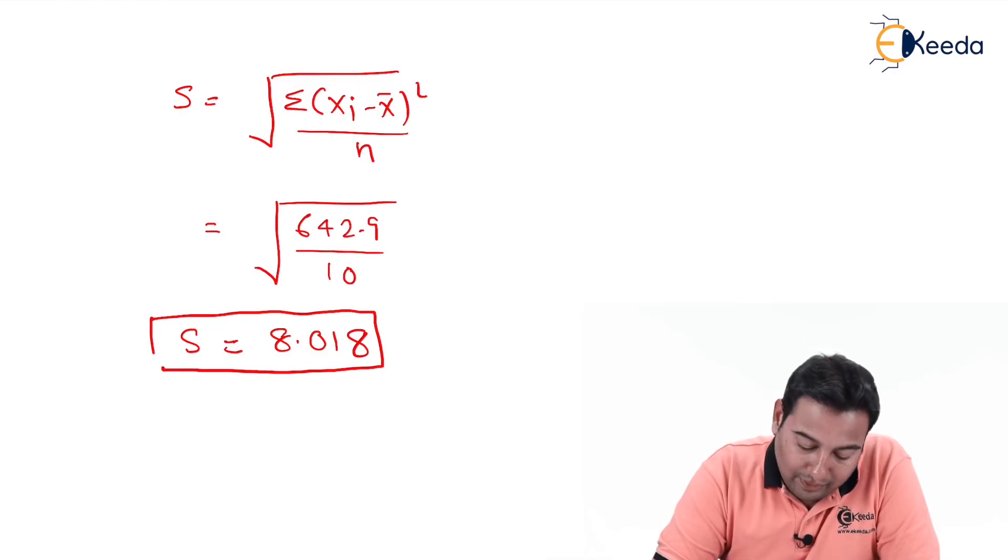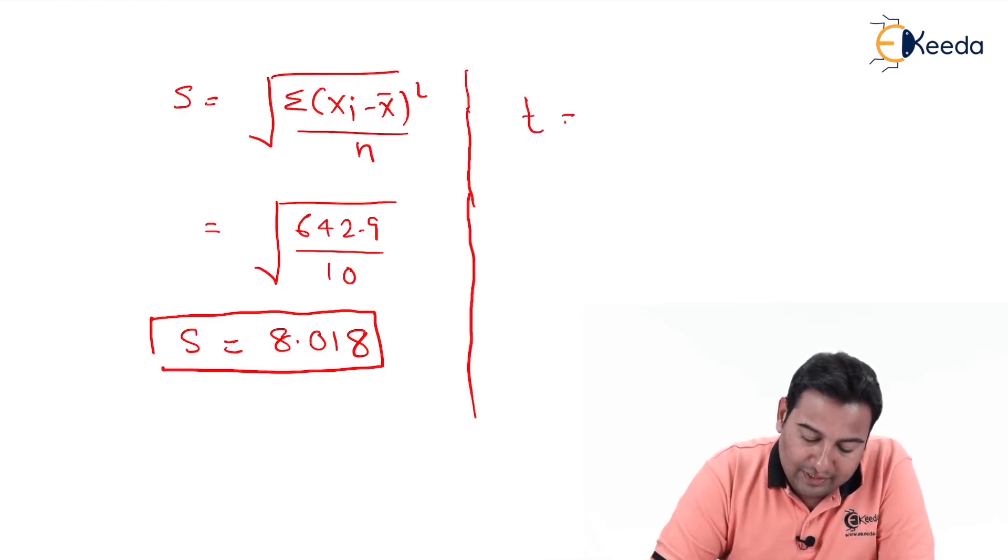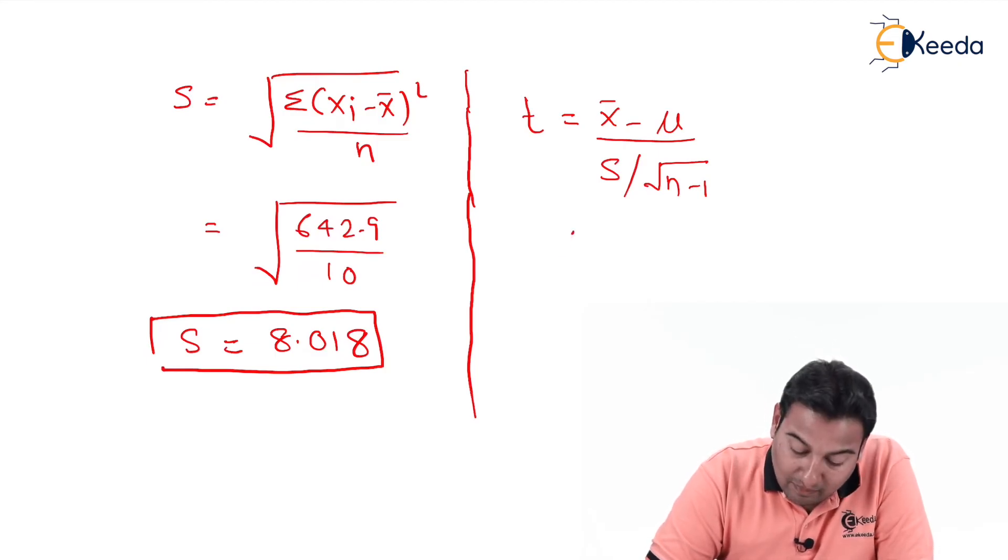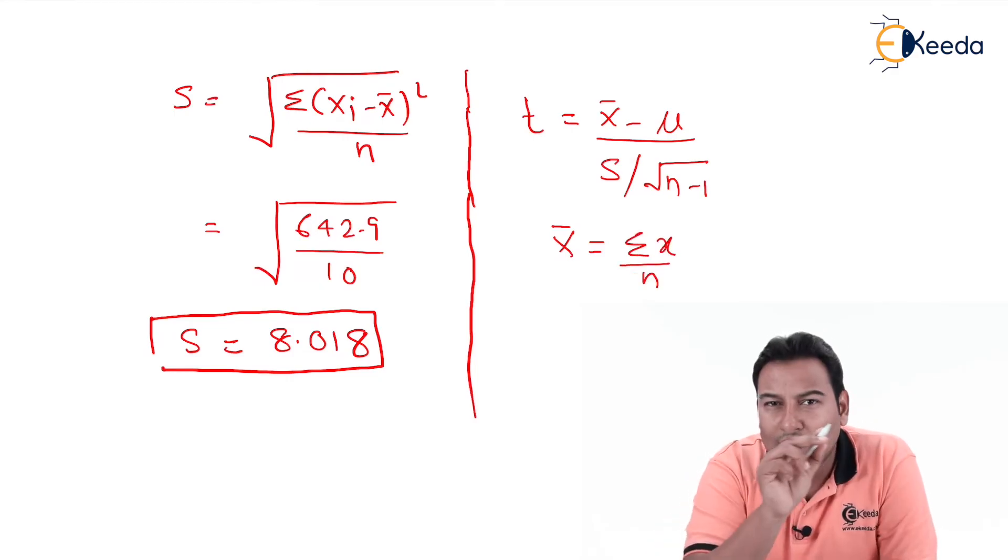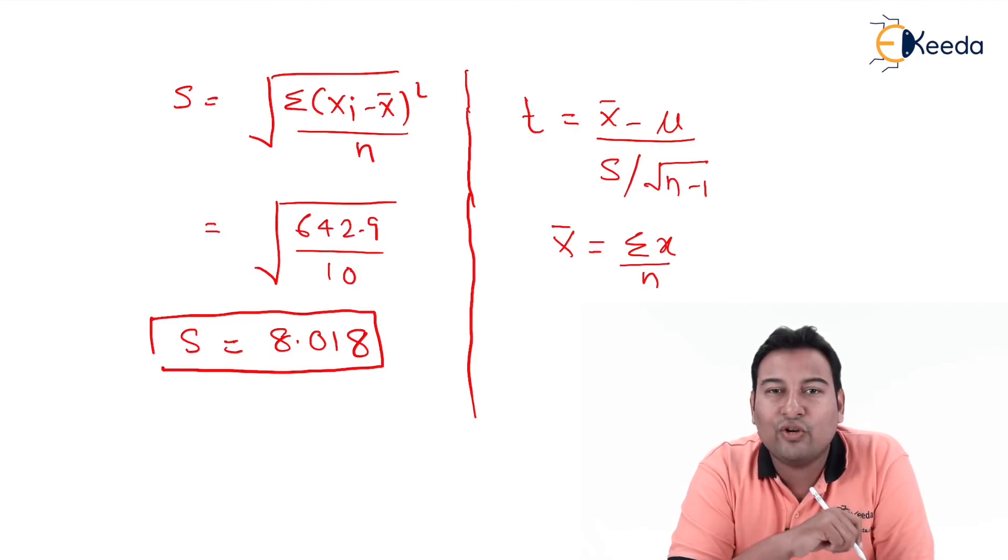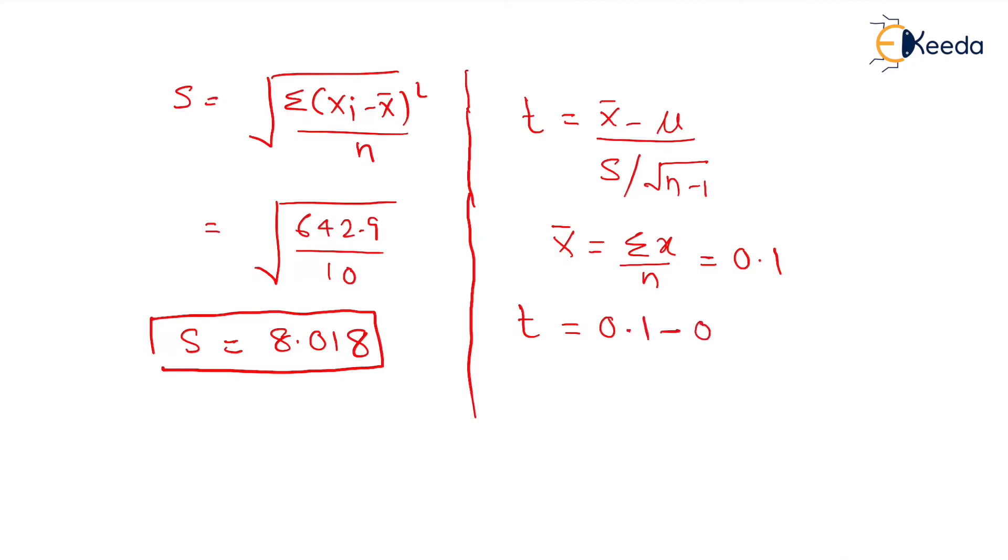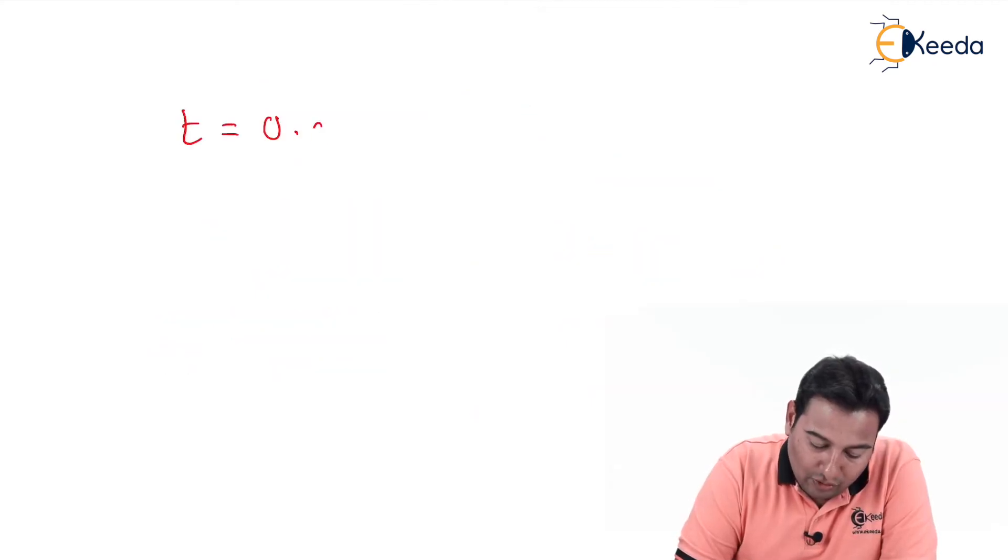Now the aim is to get the value of t. t equals x̄ minus μ upon s upon root of n minus 1. In this equation, x̄ is unknown and this x̄ is actual. Actual means summation of x upon n, that means you need to add all the values of x. x means difference and divide by n. After that you will get this value as minus 1.9. Let us put in the formula of t: minus 1.9 minus μ, μ is 0, upon s, 8.018, upon root of n minus 1, that is 9. After solving, t equals 0.037.